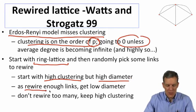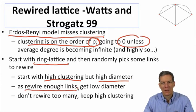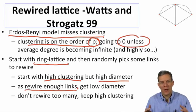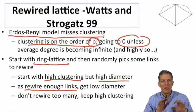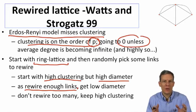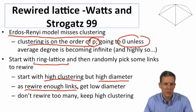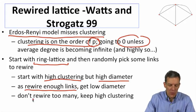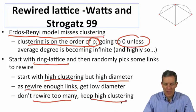Then you just change a few links in it. As you begin to change these links, you don't need to change many links in order to get a very low diameter. A few randomly placed links will actually shrink the diameter of a graph very quickly, and the average path length as well. If you don't rewire too many, you keep this high clustering.